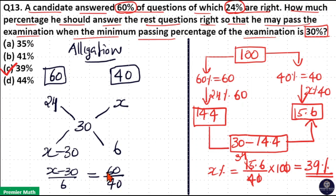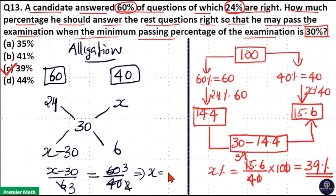Simplifying: 20 goes 3 times into 60, and 2 times into 40; 2 goes 3 times into 6. So x − 30 = 3 × 3 = 9, meaning x = 30 + 9 = 39. Therefore, option C, 39%, is the answer. If you find the first method difficult, the allegation method is simpler.